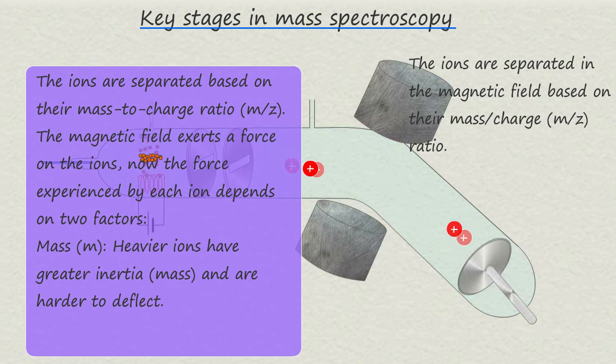The accelerated ions enter a region with a strong magnetic field. Now this magnetic field will exert a strong force on the moving charged particles, that is the ions.